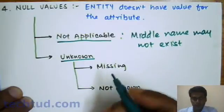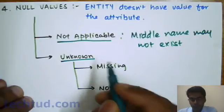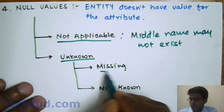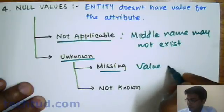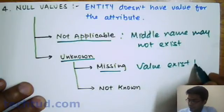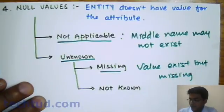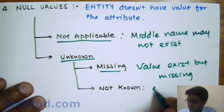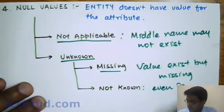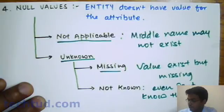The next case is 'unknown' — we do not know anything about the value. It may have two sub-cases. The first one is 'missing,' which means the value exists but is missing. The second one is 'not known,' which means we don't even know whether the value exists or not.